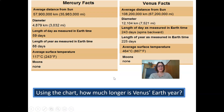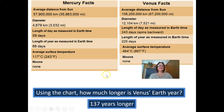Another question to consider using the fact sheet: how much longer is Venus's Earth year? You would go to the Earth year column — Mercury is 88 days and Venus is 225 days — and you should be able to get your answer. It is 137 days longer. So, how much longer is Venus's Earth year? 137 days longer.